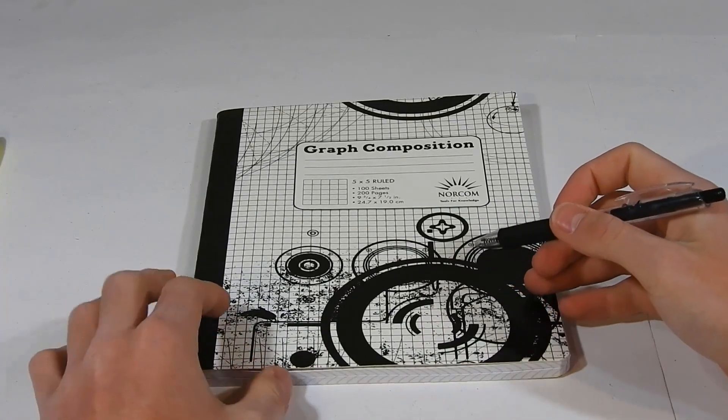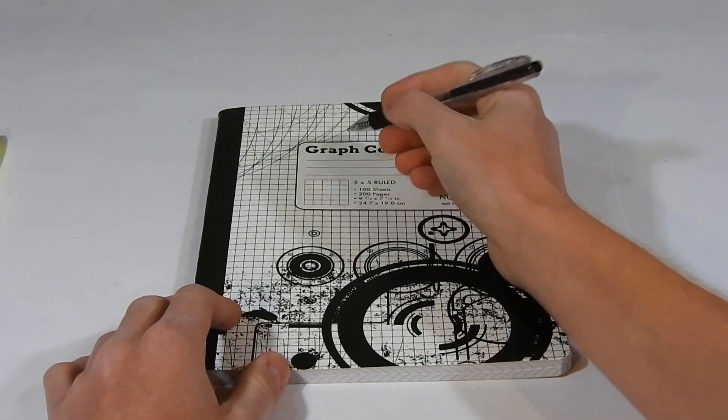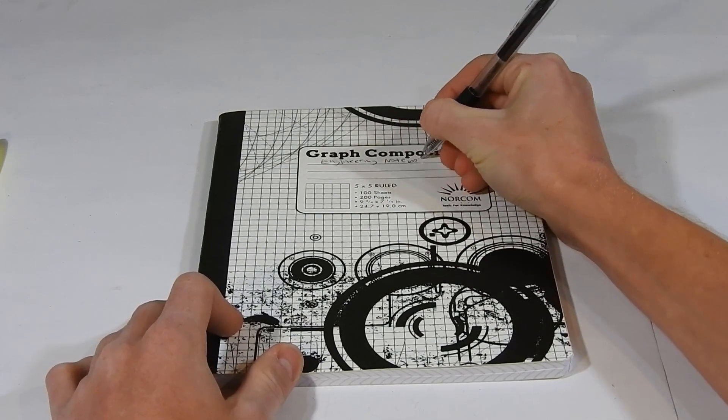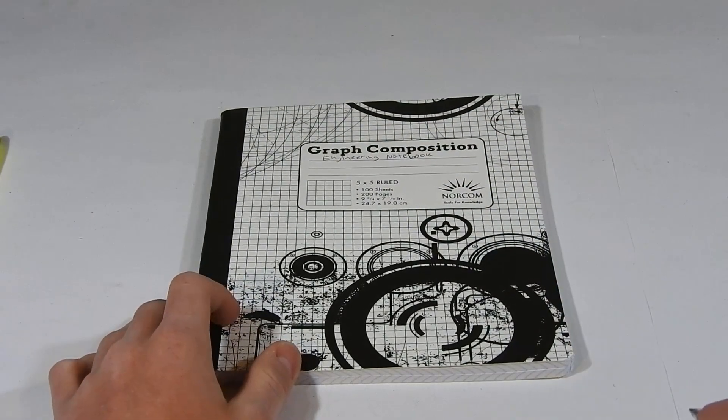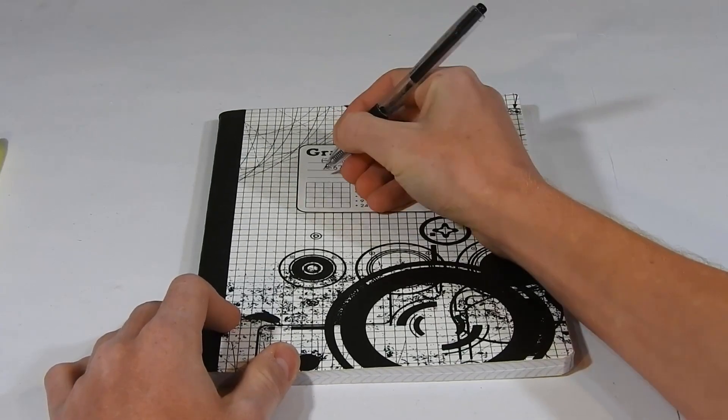When starting an Engineering Notebook, we want to take the front cover and at the first line, write Engineering Notebook. Next you're going to want to write your team number and your team name.